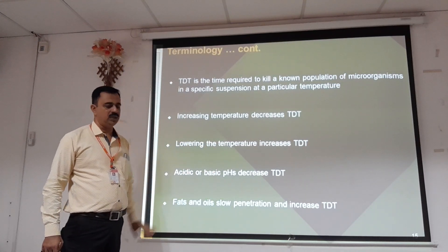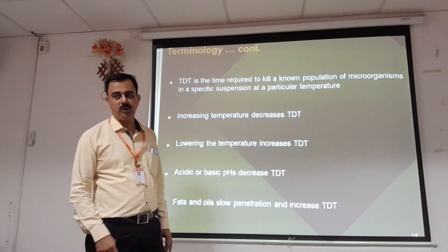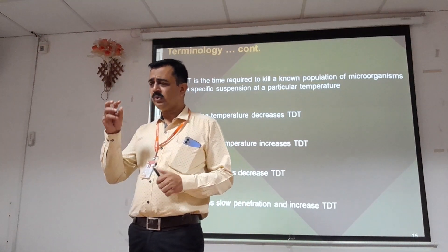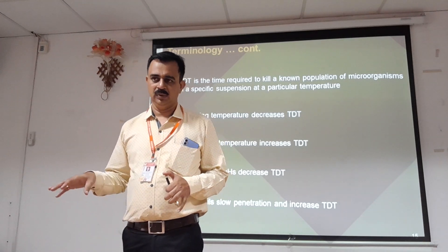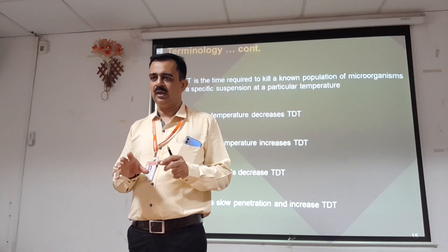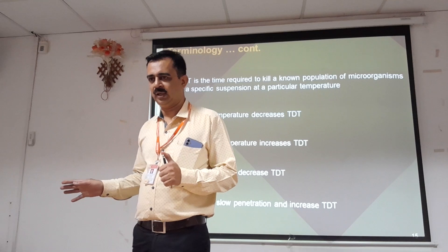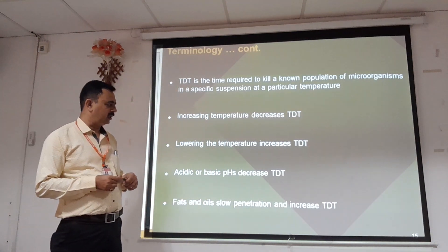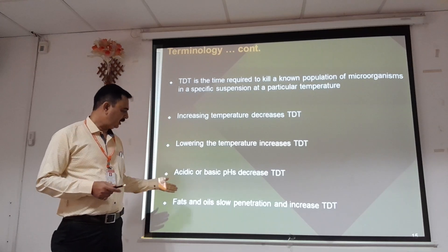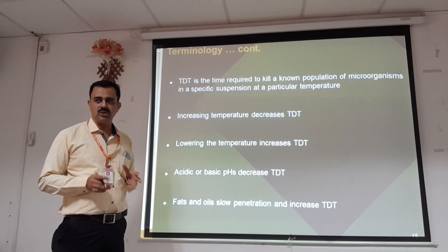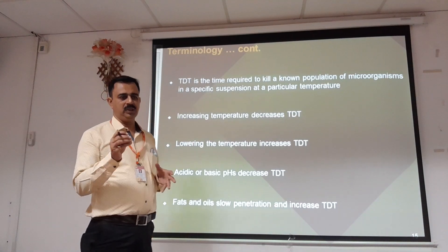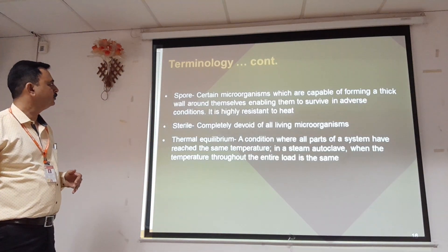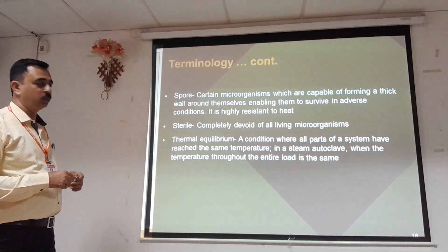Acid or alkaline pH increases TDD. pH fluctuations affect the score of the organisms. Fats and oils show penetration resistance and increase TDD — if bacteria are surrounded by fats and oils, TDD is increased. The next topic to be discussed is spores.